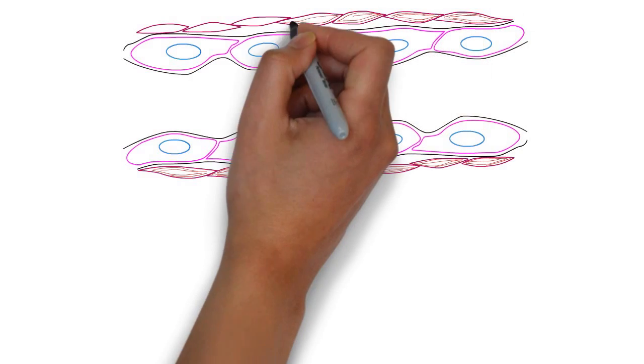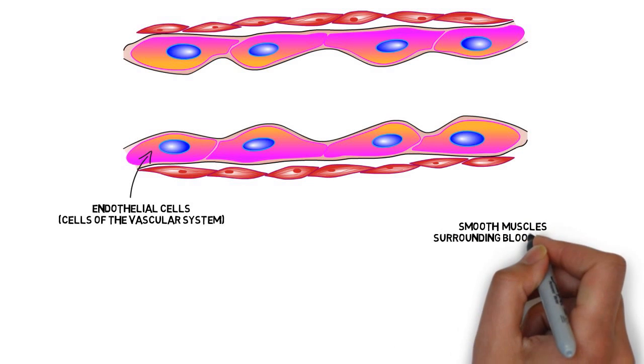This is a cross-section of a blood vessel. Its cells are called endothelial cells. These are surrounded by smooth muscles, which help to regulate optimal circulation.